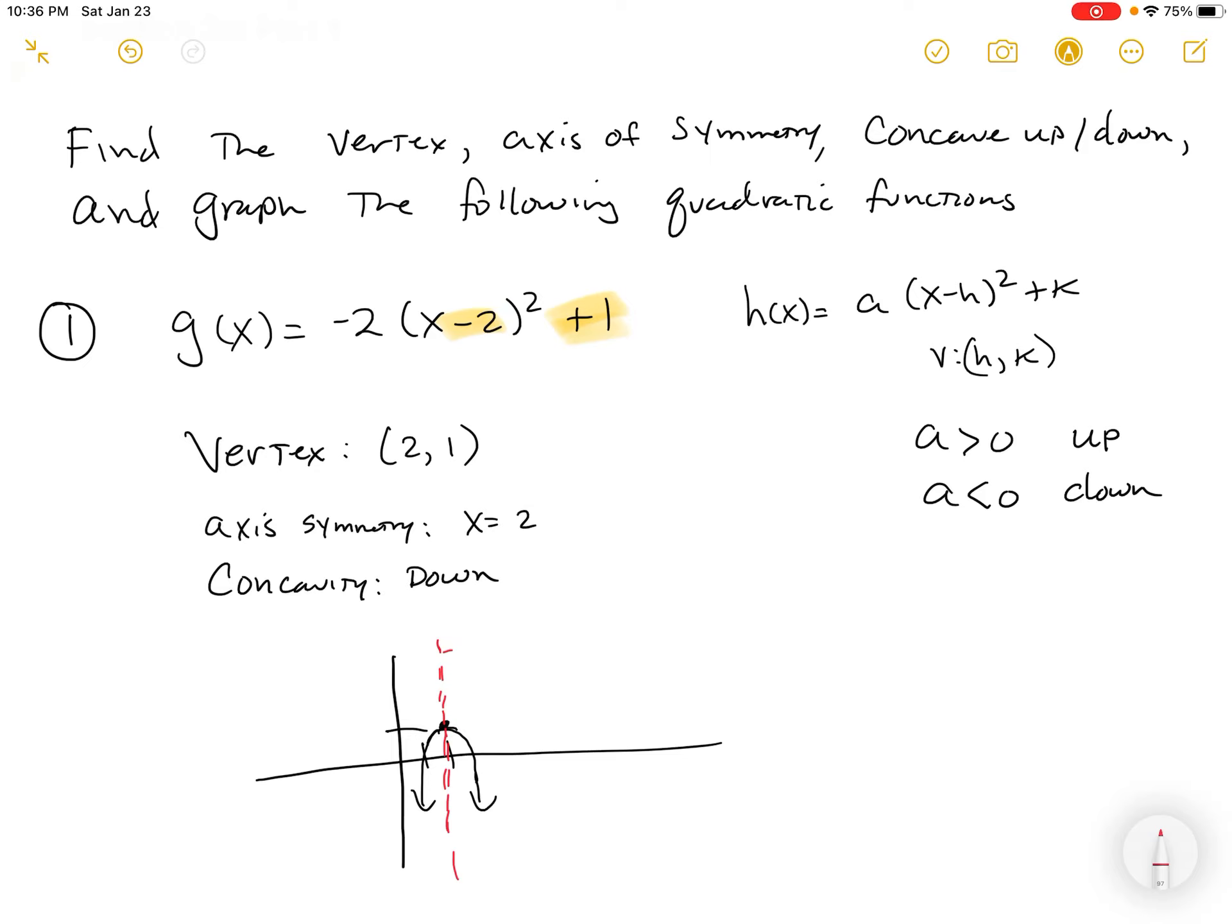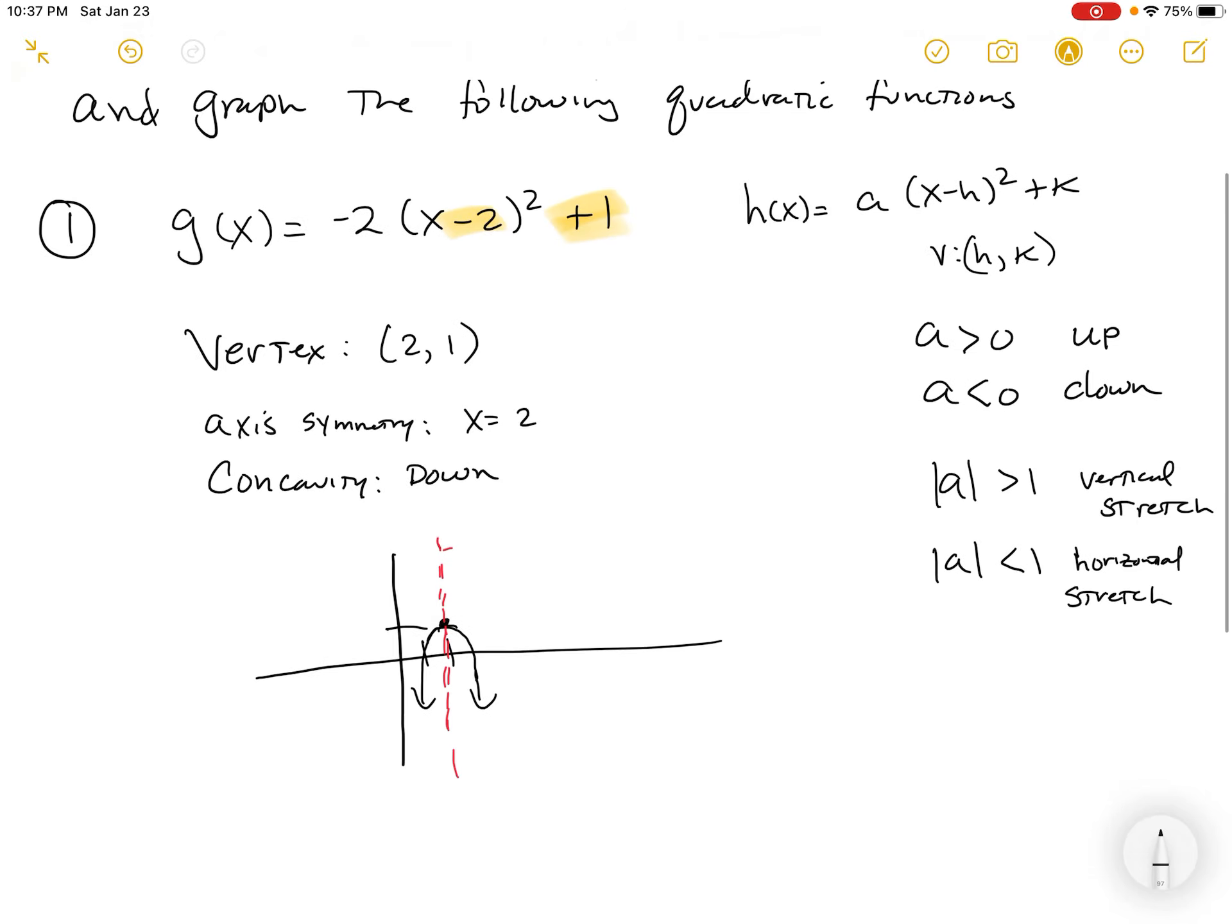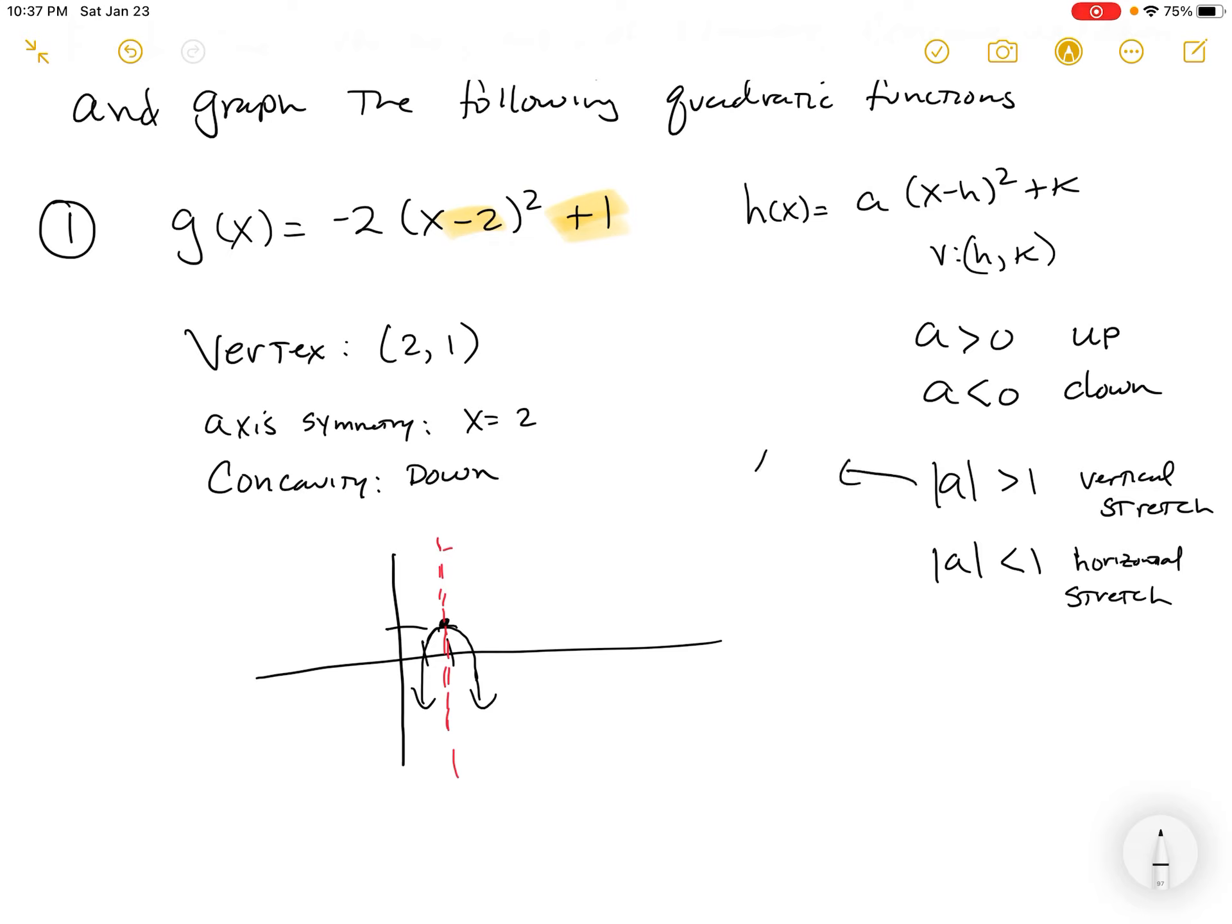And so it opens down. If the absolute value of a is greater than 1, we call that a vertical stretch. It's actually going to pull those parabola tails closer to the axis of symmetry. If the absolute value of a is less than 1, then that's going to be a horizontal stretch—it's going to be wider. So essentially, this top one right here is a more narrow parabola, and this one is a wide parabola.